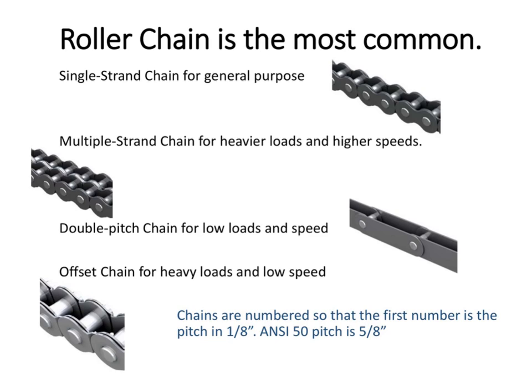The roller chain is the most common, and there are different types of those. We have a single strand chain for general purpose, the multi-strand chain for heavier loads and higher speeds, the double pitch chain for low loads but higher speed — and they're also a little bit cheaper, which is why people use those. The offset chain is for heavy loads with low speed.